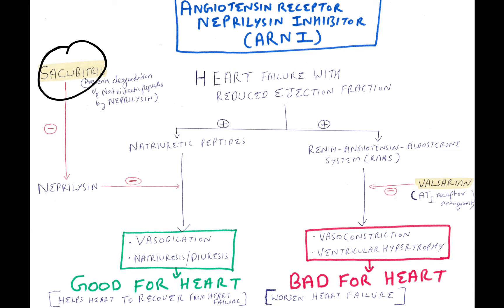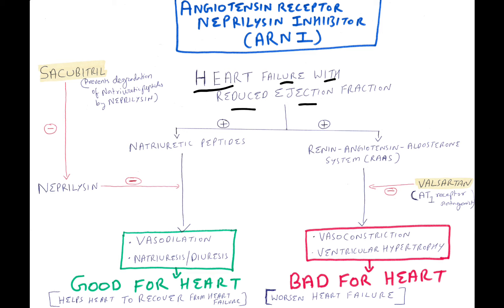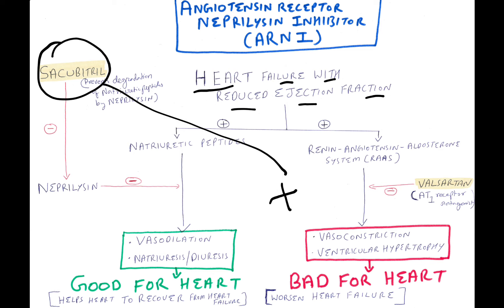Sacubitril, a neprilysin inhibitor, inhibits neprilysin and thus prevents the degradation of natriuretic peptides by neprilysin. Therefore, to treat heart failure with reduced ejection fraction, we give a combination of Sacubitril plus Valsartan.